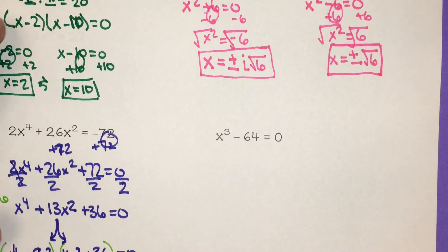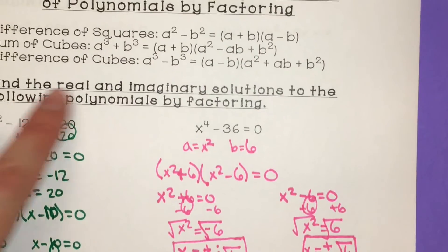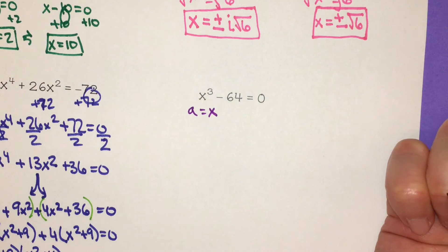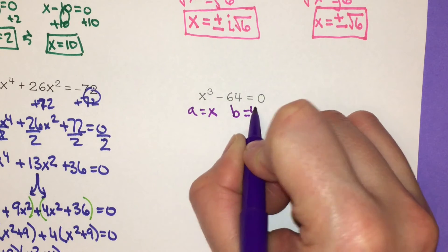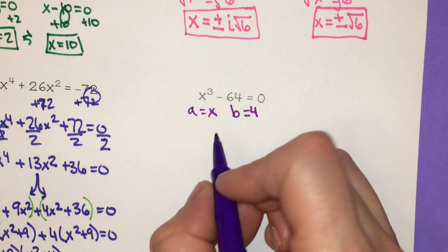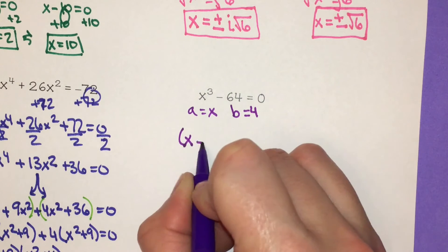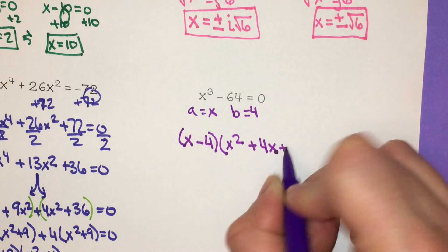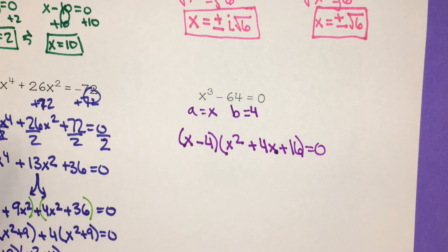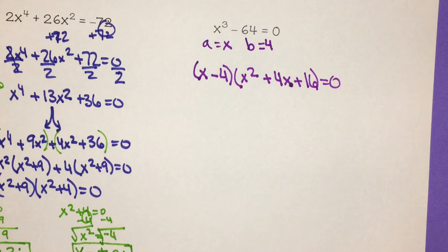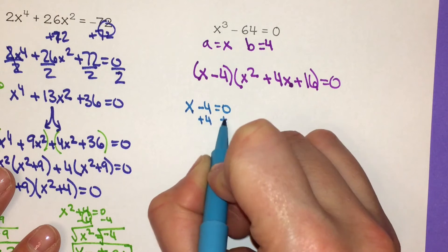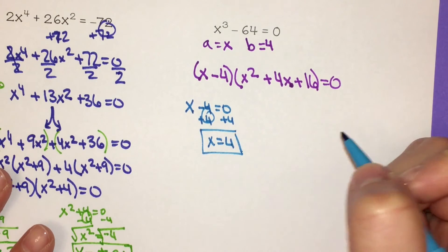Let's try this last one. We have x cubed minus 64 equals 0 — this is a difference of cubes. The a value is x because x times itself three times is x cubed, and b is 4 because 4 times itself three times is 64. That gives us x minus 4 times x squared plus 4x plus 16 equals 0. From the first factor, x minus 4 equals 0, so adding 4 to both sides gives x equals 4.